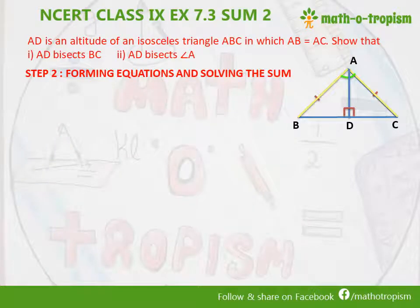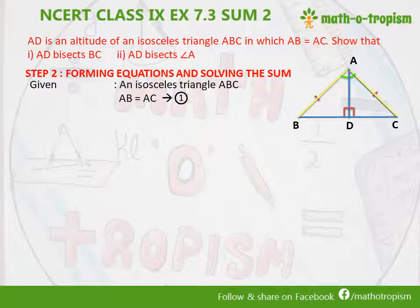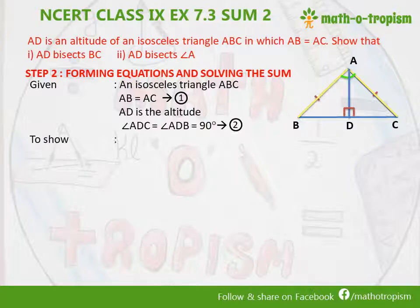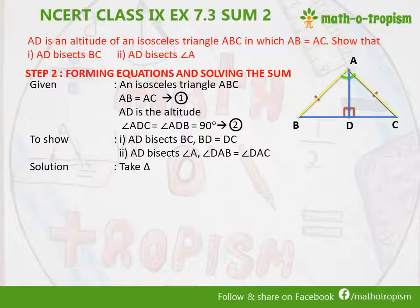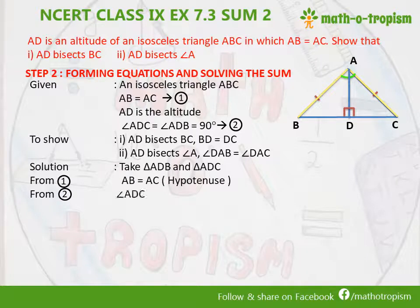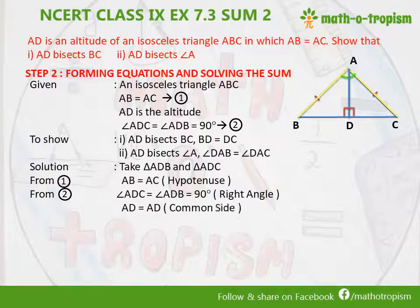Forming equations and solving: the given is an isosceles triangle ABC where AB is equal to AC — equation 1. AD is the altitude, so angle ADC will be equal to angle ADB which is 90 degrees — equation 2. We need to show: first, AD bisects BC meaning BD equals DC; second, AD bisects angle A meaning angle BAD equals angle CAD. We start the solution by taking triangles ADB and ADC. From equation 1, AB equals AC; from equation 2, angle ADB equals angle ADC equals 90 degrees; and AD is the common side. We know AB and AC are the hypotenuse since these two angles are 90 degrees.